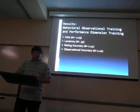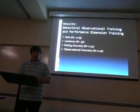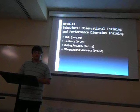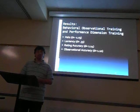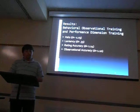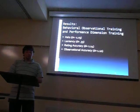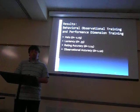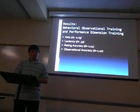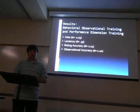When combining behavioral observation training and performance dimension training, results indicated a large negative effect size of 1.03 for halo errors and a moderate positive effect size of 0.35 for leniency errors. They also indicated large positive effects of 1.14 and 1.10 for both rating accuracy and observational accuracy respectively.